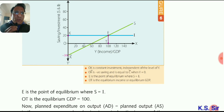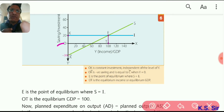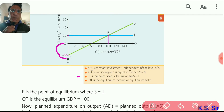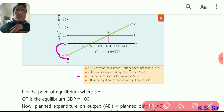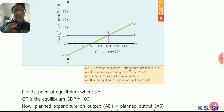Point E is the equilibrium where S equals I. At this point 80 plus 20 equals total income of 100. OT is the equilibrium income on the diagram. The diagram is straightforward — the saving line and the horizontal investment line intersect at the equilibrium point E.